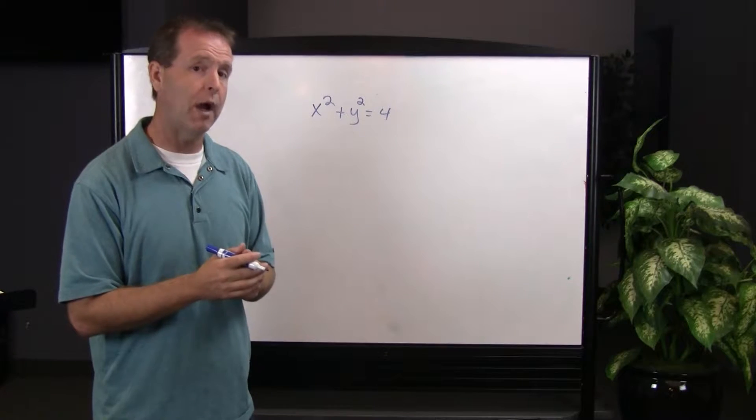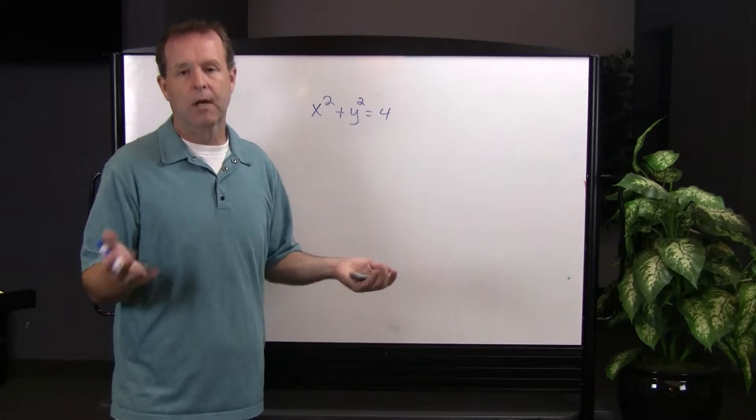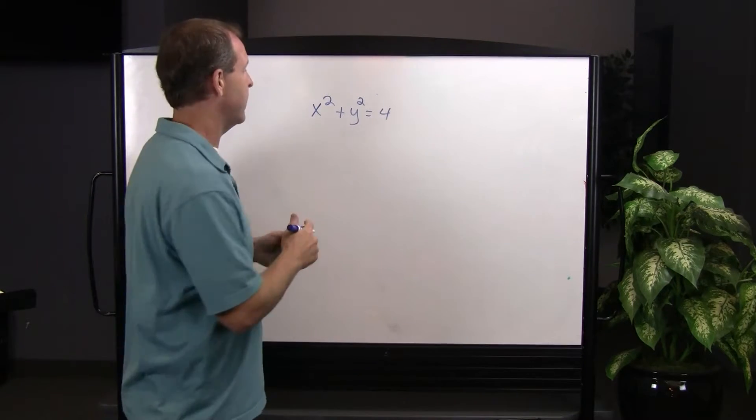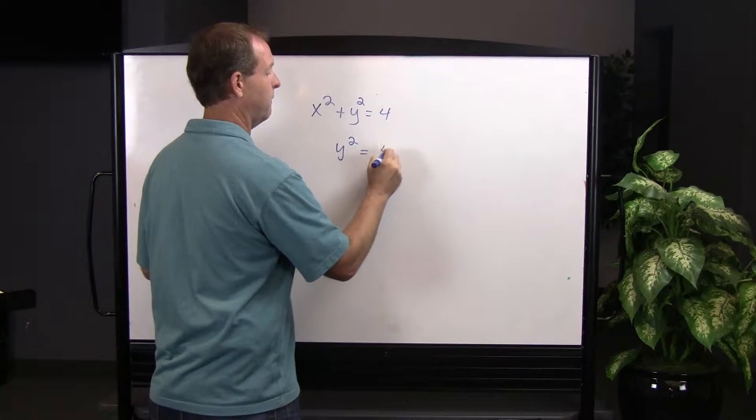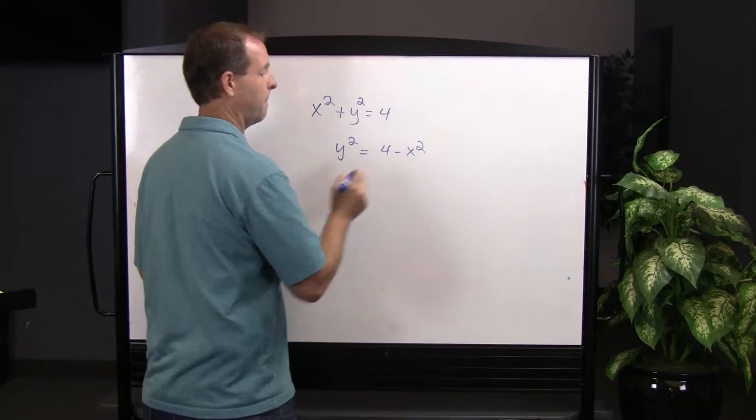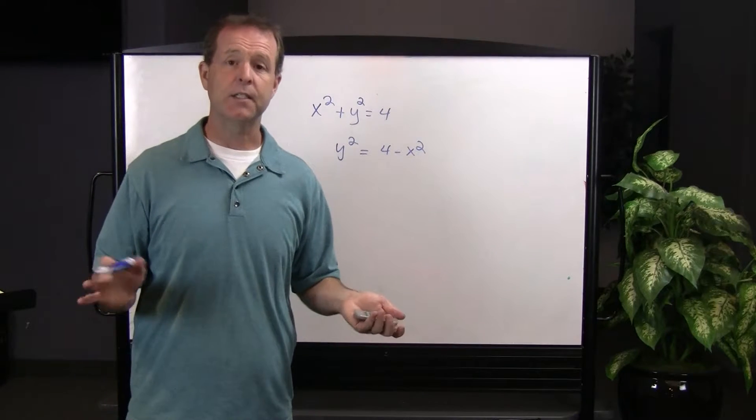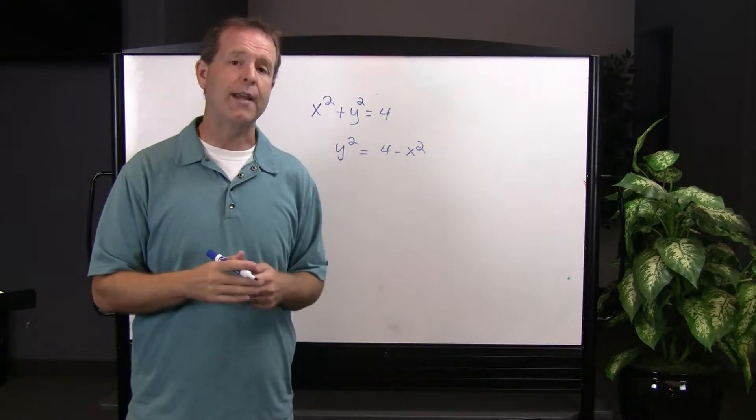Again, let's solve for y. I'll start the same way. I'll subtract x squared from both sides. I'll get y squared equals 4 minus x squared. The equation is not solved for y yet. It's solved for y squared.